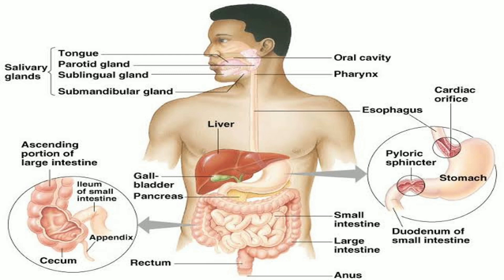As you can see, this is the labelled picture of our digestive system — the system that constitutes all the organs which play a role in digestion and absorption of food. We have also discussed the alimentary canal, which is the path the food takes: mouth, food pipe, stomach, small intestine, and large intestine.